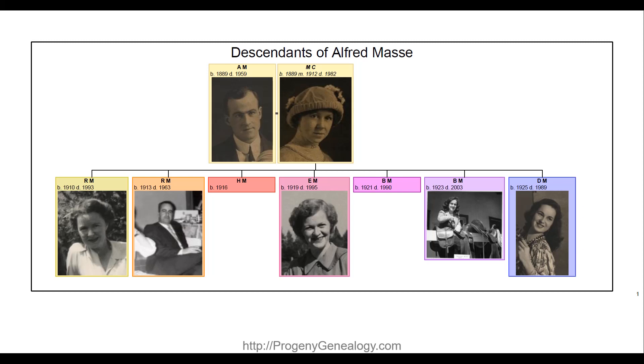My grandmother always said that her husband, Alfred, was the father of her four daughters, including Ruby. I even have Ruby's official government birth certificate.